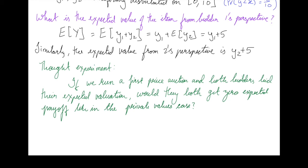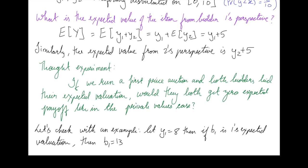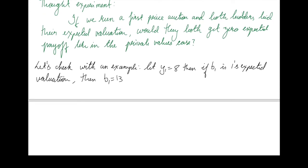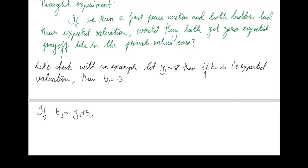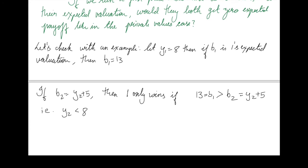We'll try this out with an example. Let's say that Y1 is 8. Then the bid that player 1 would submit, if they were submitting their expected valuation, B1 would have to be 13, which is Y1 plus 5. Now let's suppose player 2 is also bidding B2 equals Y2 plus 5. Then the only way that 1 wins is if this bid 13, which is B1, is bigger than the bid of B2, which is Y2 plus 5. That means Y2 would have to be smaller than 8. But here's the rub. If Y2 is smaller than 8, then the expected value of Y2, conditional on it being smaller than 8, is 4.